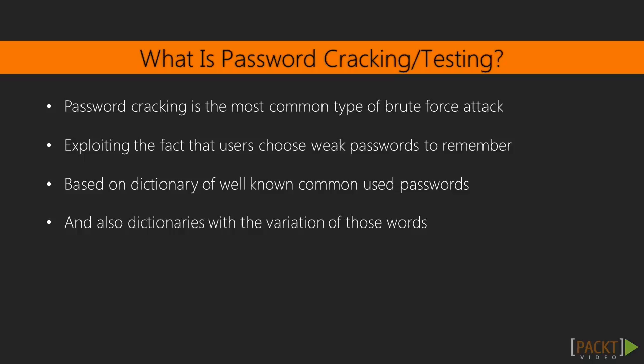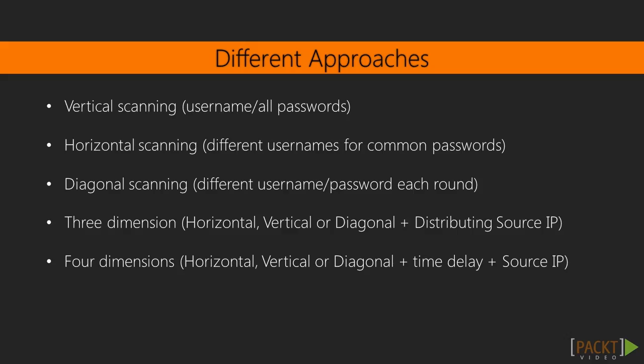When planning a password attack we have different options. The most common is vertical scanning, which takes one username and tries all passwords in the dictionary. The second option is called horizontal scanning, which is basically the opposite — it takes a password and tests it against all usernames.